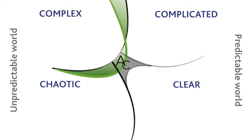In the clear domain, everybody can see the relationship between cause and effect and nobody disputes it. The decision model, if your issue is in the clear domain, is to sense, categorize, respond. Nice and simple. This is a space of consistency, of standard operating procedures. It's a good space for many, although some of you or your people may say it sounds underwhelming and boring.